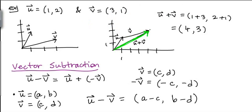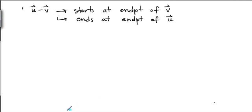Remember, in vector addition, the starting point of this vector is the start point of u, and the ending point is the endpoint of v. In vector subtraction, we've got to be careful because it starts where v ends, and it ends where u ends. So let us do an example.